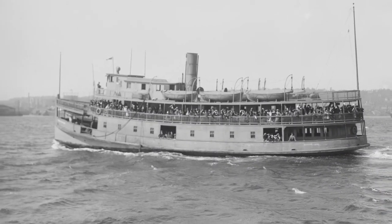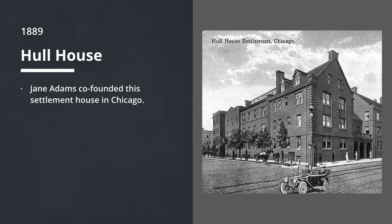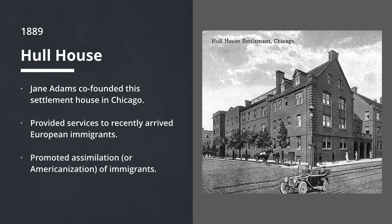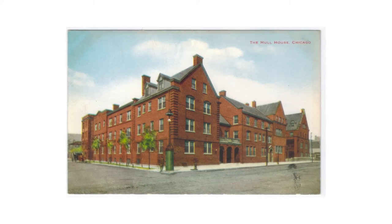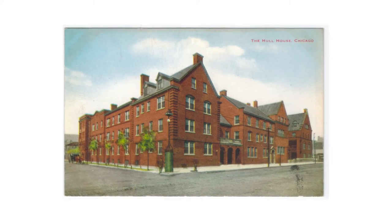To handle the mass migration of immigrants, we see activists like Jane Addams in 1889 co-found the settlement house — Hull House in Chicago. Hull House provided services to recent immigrants, European immigrants in particular, promoted assimilation and the Americanization of immigrants, but was also in favor of restricting further immigration. Here's a photo of Hull House in Chicago, where you can see how large it is, where thousands of immigrants were served by Jane Addams and her staff.